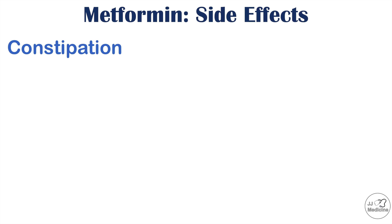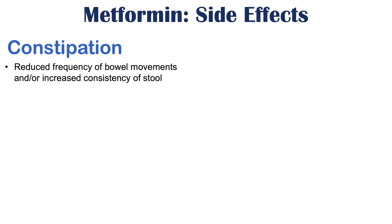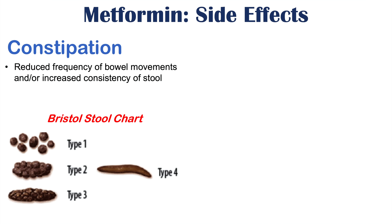Alternatively, metformin can cause constipation, though this is less common than diarrhea. Constipation refers to reduced frequency of bowel movements and/or increased consistency of stool. Looking at the Bristol stool chart, type 4 is normal, while constipation corresponds to type 1, type 2, and type 3 stool. Diarrhea remains the more common GI side effect.